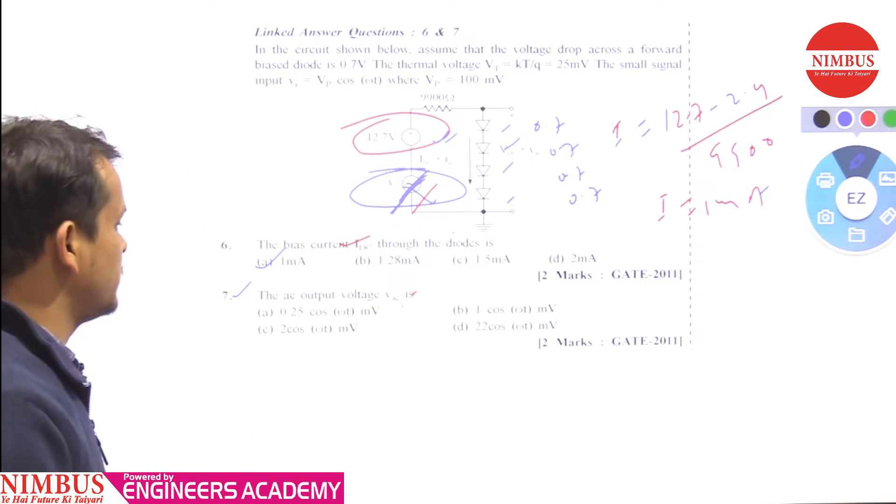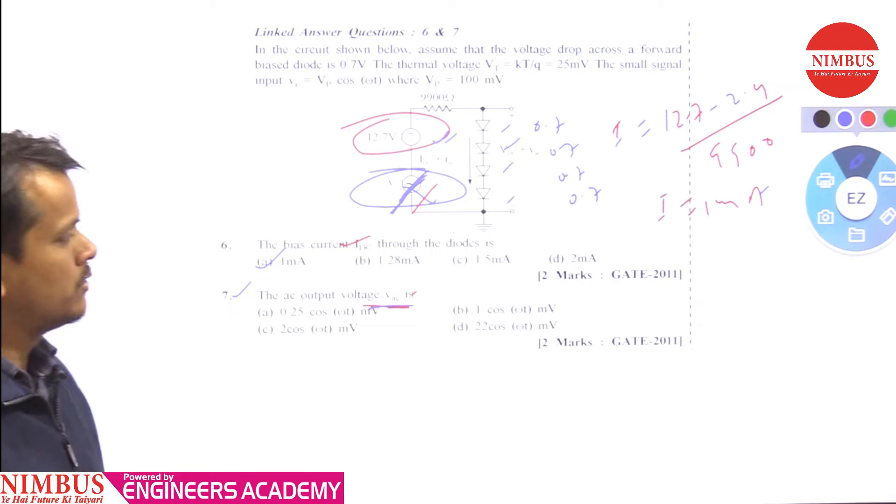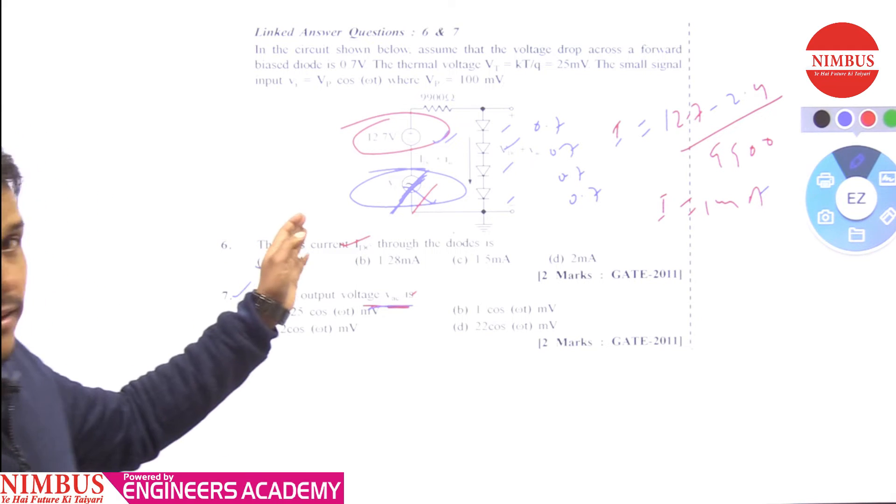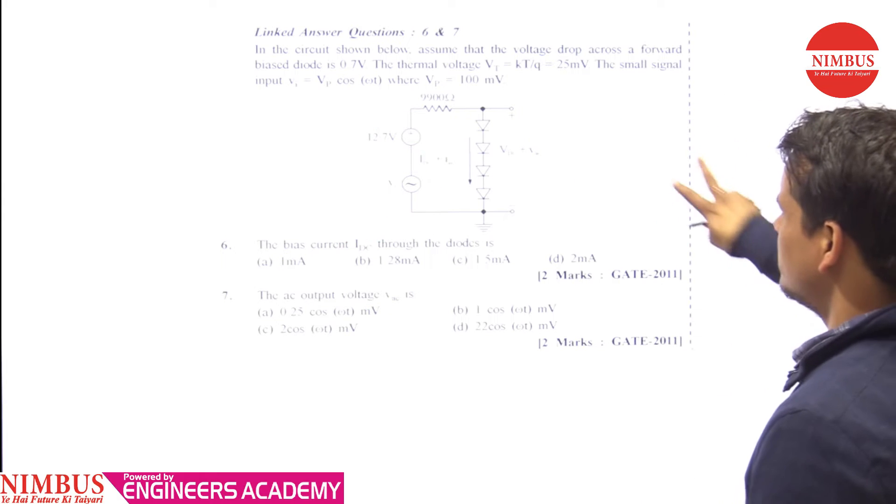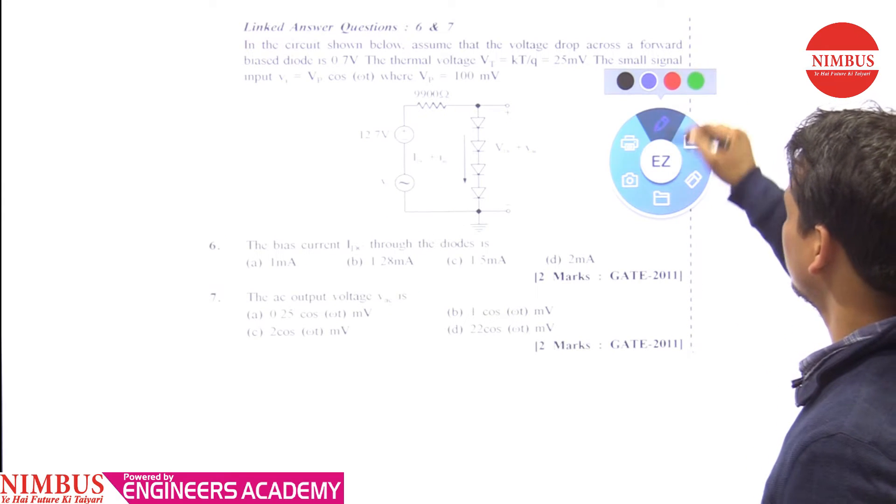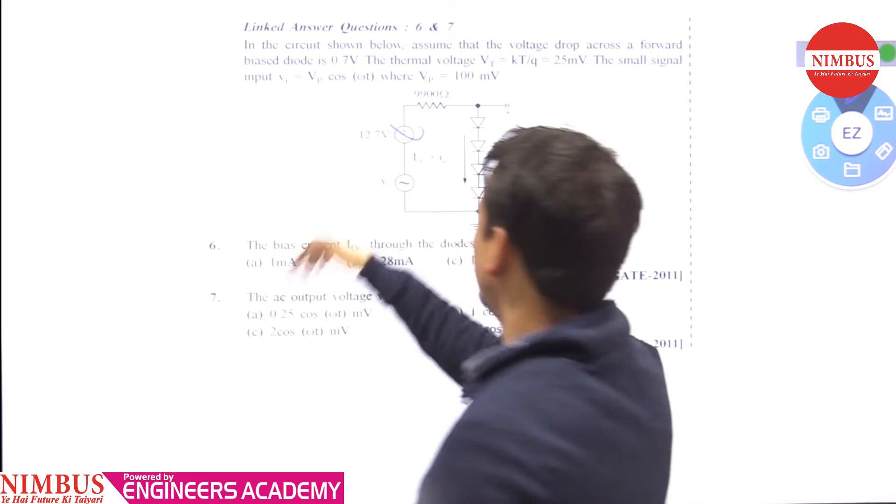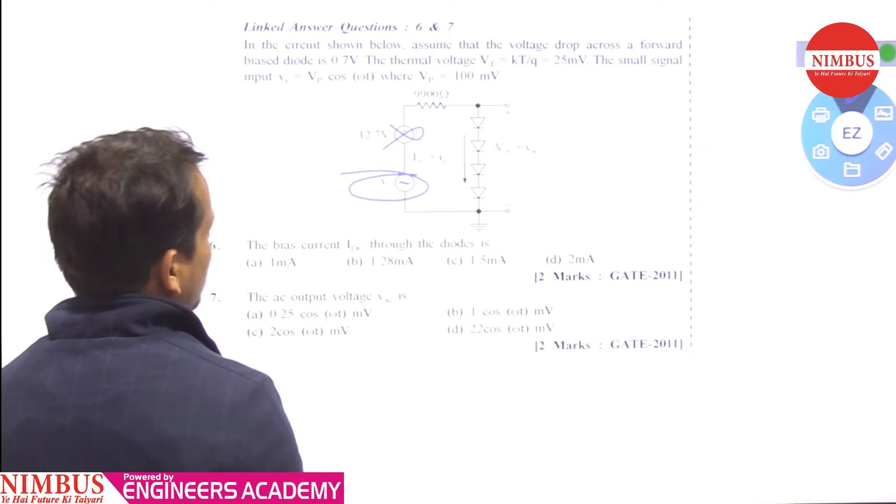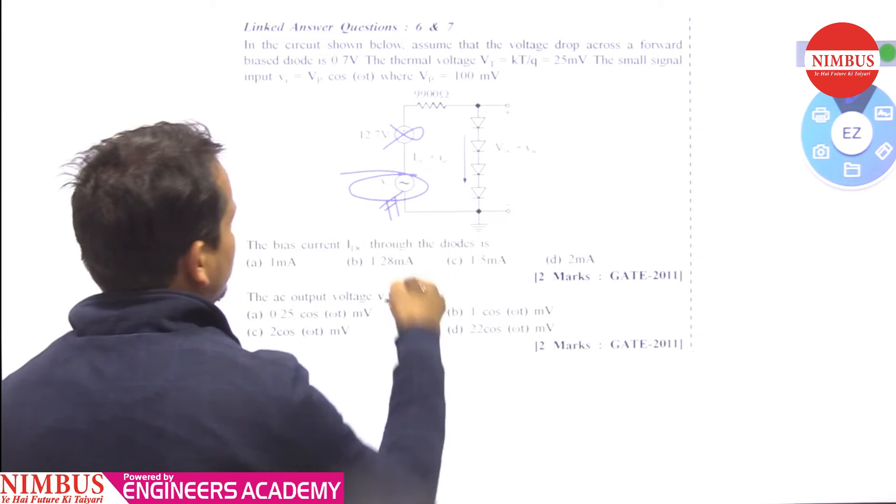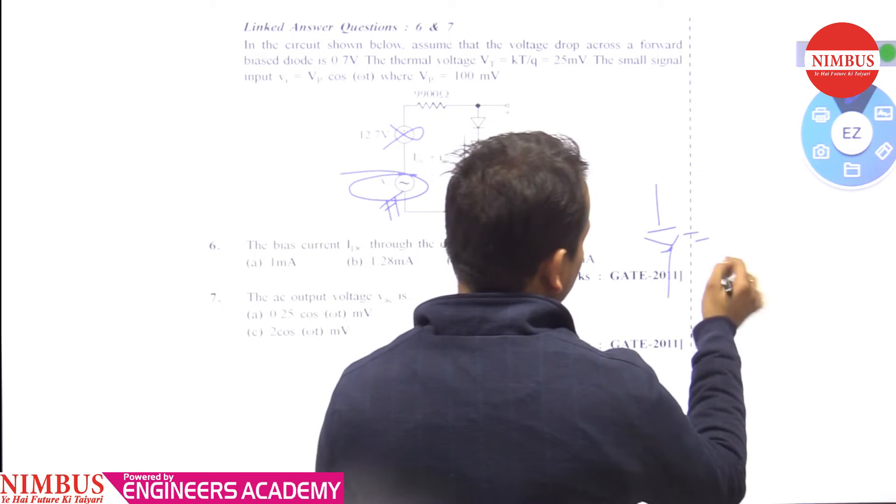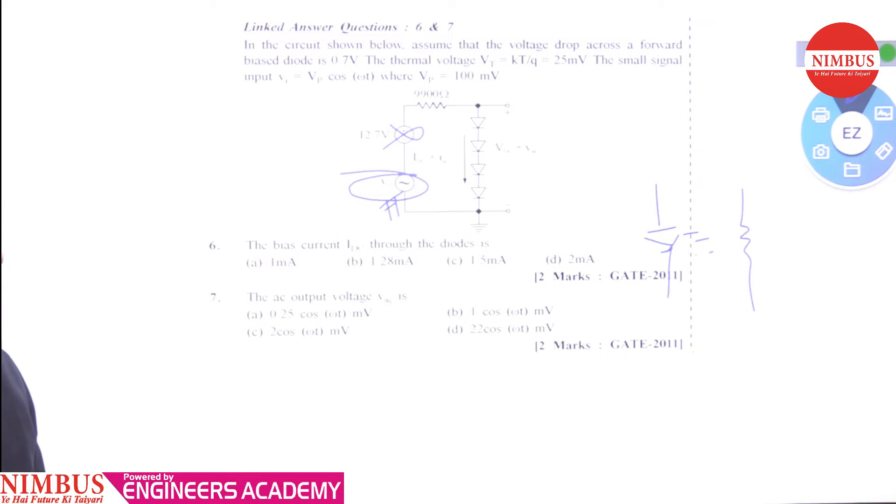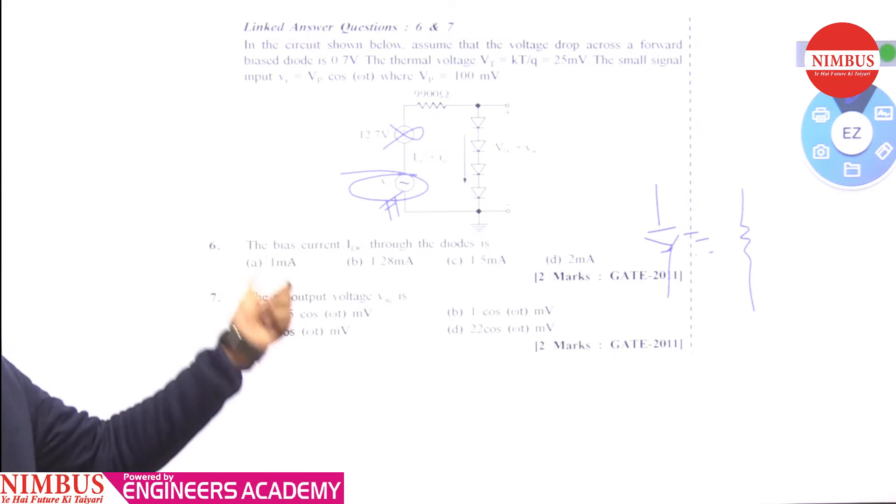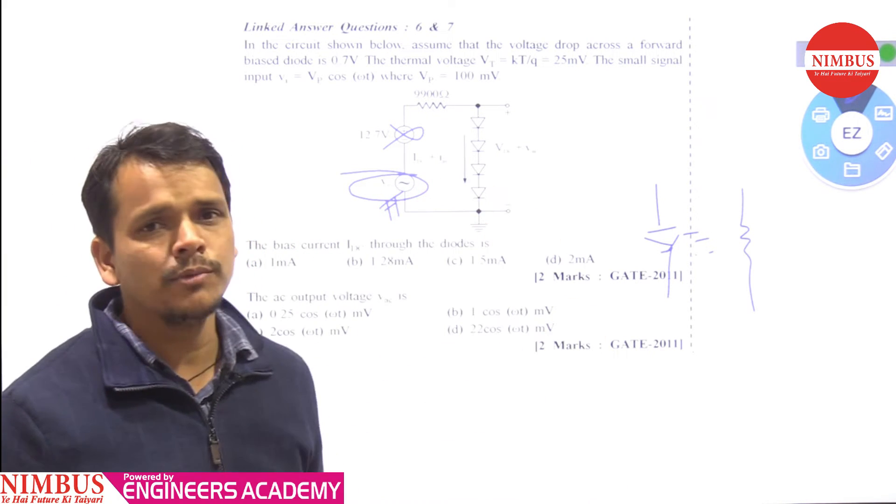Now for the AC output voltage, we need to perform AC analysis. For AC analysis, we disable the DC sources and replace the diode with its small signal model, since Vi is a small AC signal.